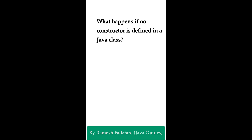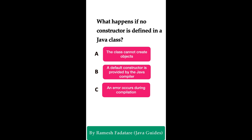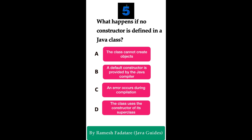Welcome to Java Quiz Series. Here is one more question: What happens if no constructor is defined in a Java class? Option A: a class cannot create objects. Option B: a default constructor is provided by the Java compiler. Option C: an error occurs during compilation. Option D: the class uses the constructor of its superclass. You have five seconds to answer.